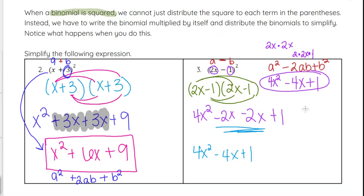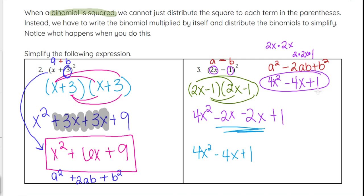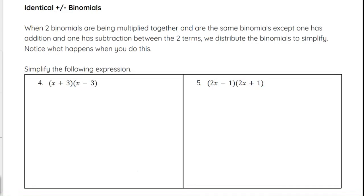If you don't know that pattern, you can just write it out as 2x minus 1 times 2x minus 1 and distribute like we did with regular binomials. When you do that: 2x times 2x is 4x squared, then negative 2x, negative 2x, and negative 1 times negative 1 is plus 1. Combine those middle like terms and you get 4x squared minus 4x plus 1. Either method works, but if you know the shortcut it can save you time — and the same goes when we get to factoring.